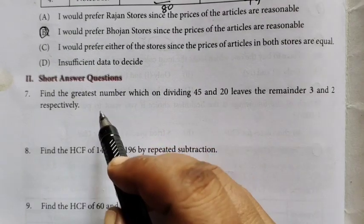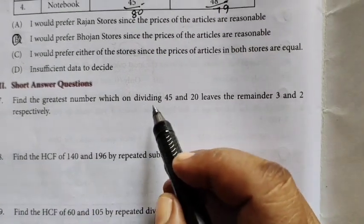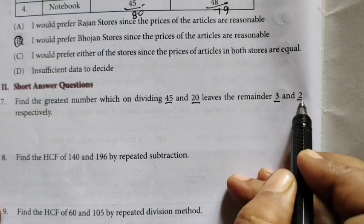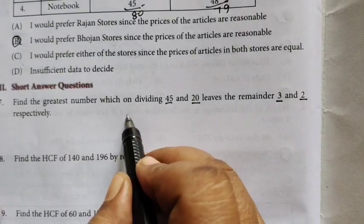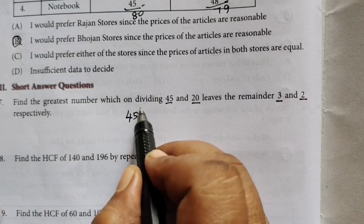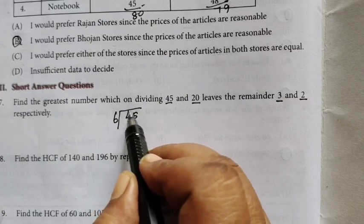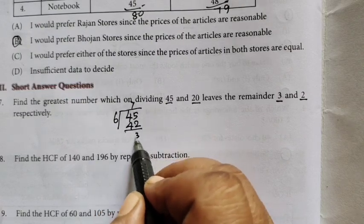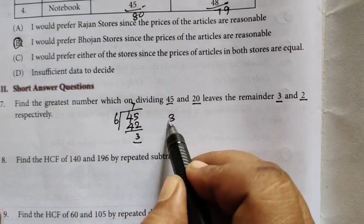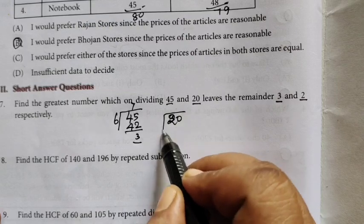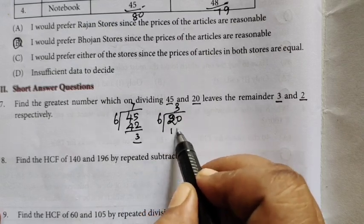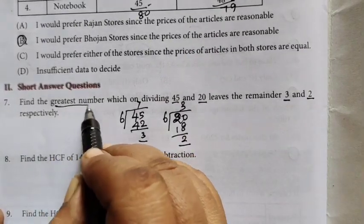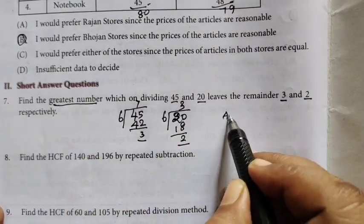Short answer questions. Find the greatest number which on dividing 45 and 20 leaves the remainder 3 and 6. This is very easy question. 45 is divided by 6, 6 divided by 42, remainder 3. That is 20, you are dividing by 6, so 3 times 18, remainder 2. So this is the greatest number, greatest number is answer 6.